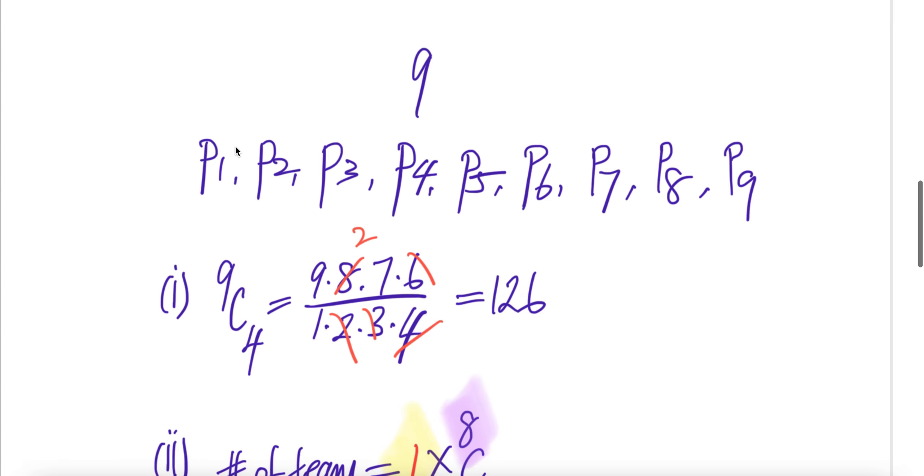So there are nine persons, P1 all the way to P9. Let's do the first one. First one is out of this nine, we're going to choose four of them. So 9 choose 4.